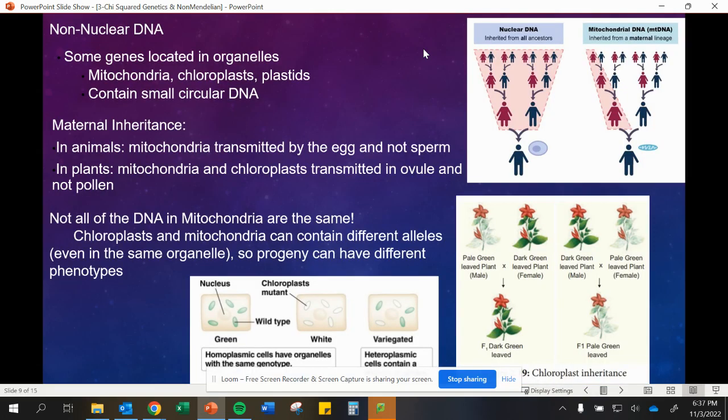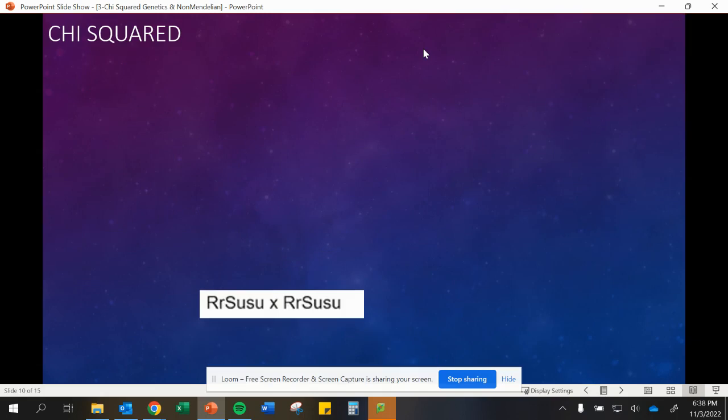Those are the examples of non-Mendelian genetics we'll go through in this class right now. Next video we'll talk about some other ones, but I also want to have us look at how can we do a chi-squared analysis with these types of problems. It's very possible that you will be asked to do chi-squared analyses on genetics problems.